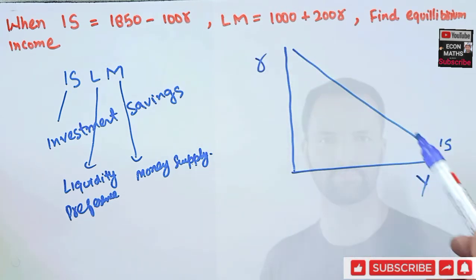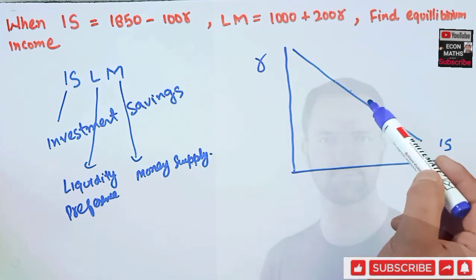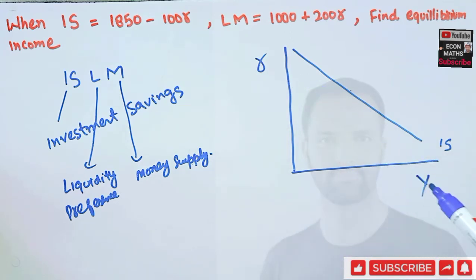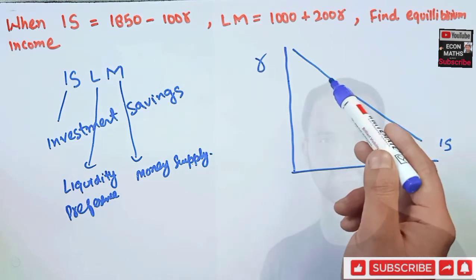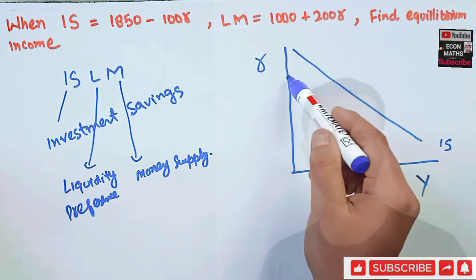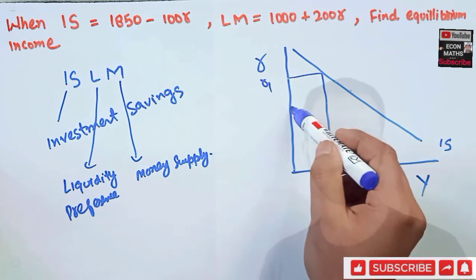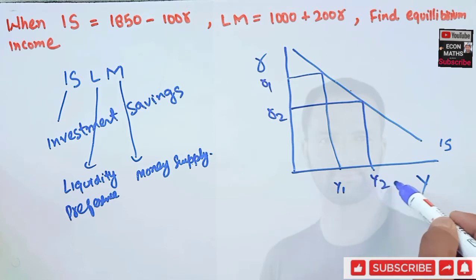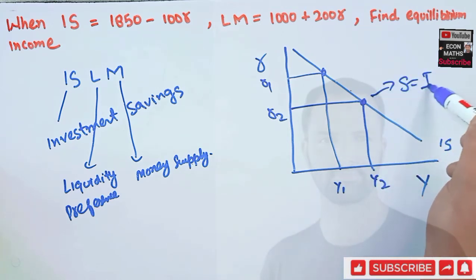The IS curve shows us: on one axis we have the level of output and on the other axis we have the rate of interest. Every point on this IS curve shows a different combination of rate of interest and income — what we call GDP — at which savings is equal to investment. For example, R1 and Y1 is one combination, and R2 and Y2 is another combination.